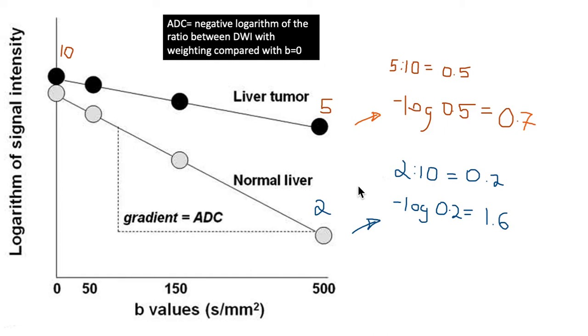If we compare that with the negative logarithm of the signal of normal tissue compared to its signal when there was no gradient given, such as B0, we will get 1.6.